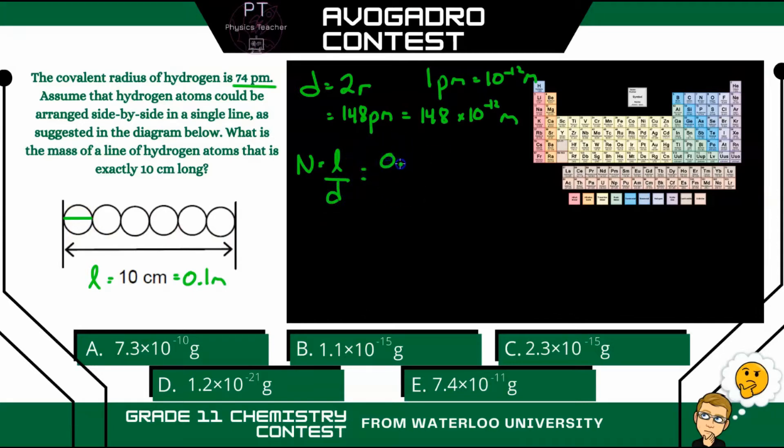So when we do that, we have 0.1 meters divided by 1.48, if I move the decimal place over to put it in scientific notation, I just subtract 2 from the exponent. So minus 10. And we get 6.76 times 10 to the 8.